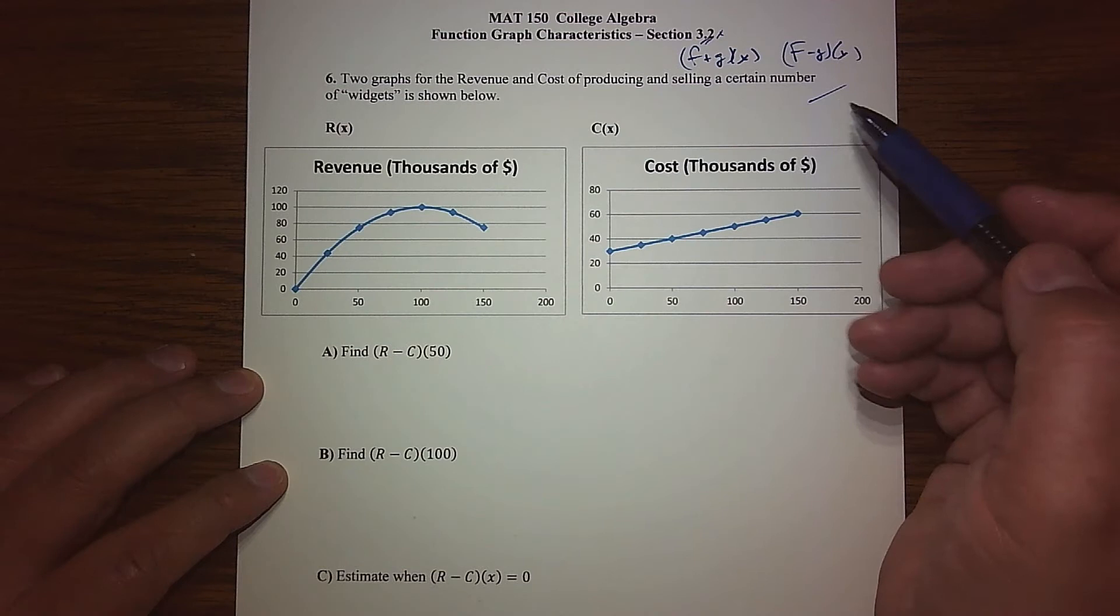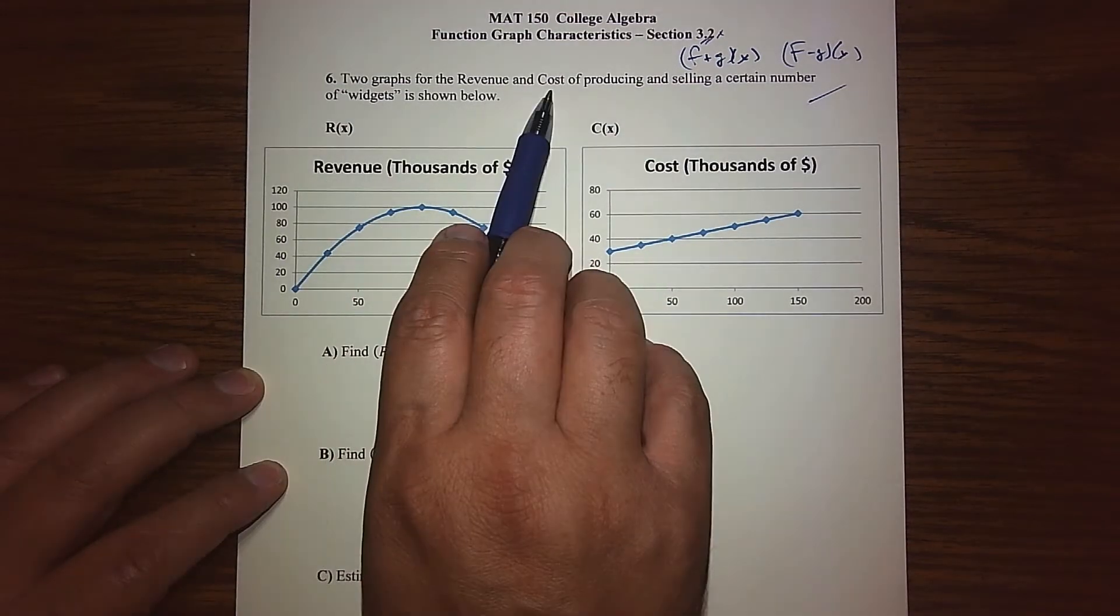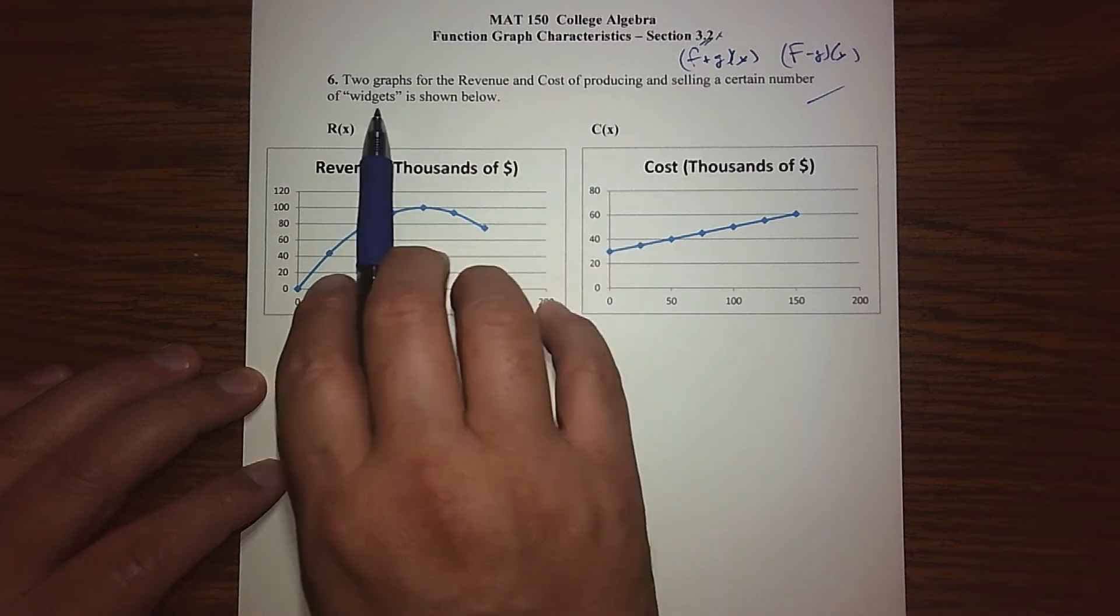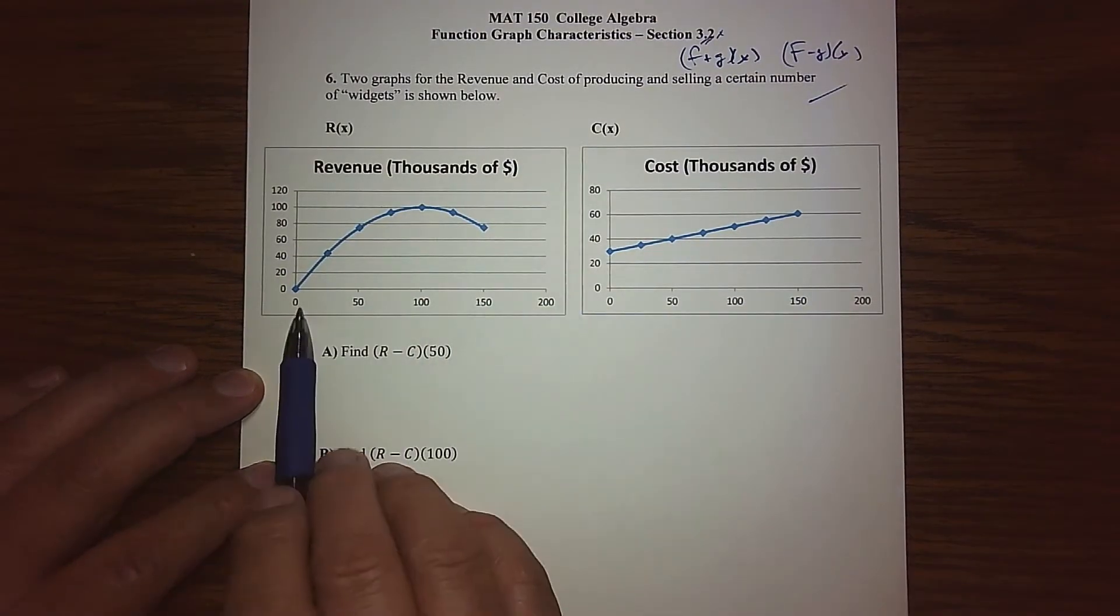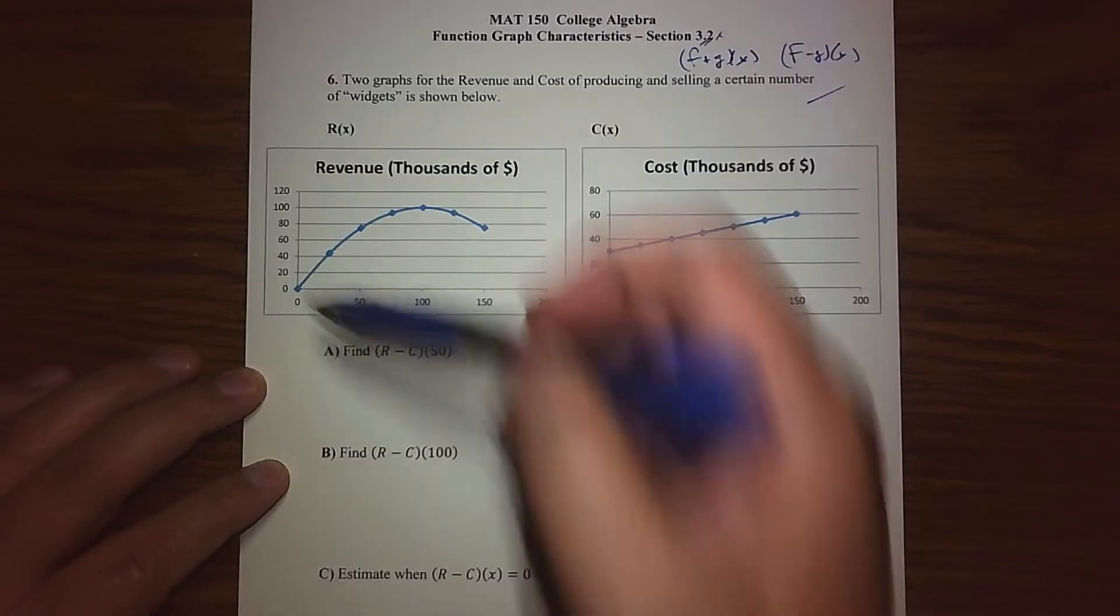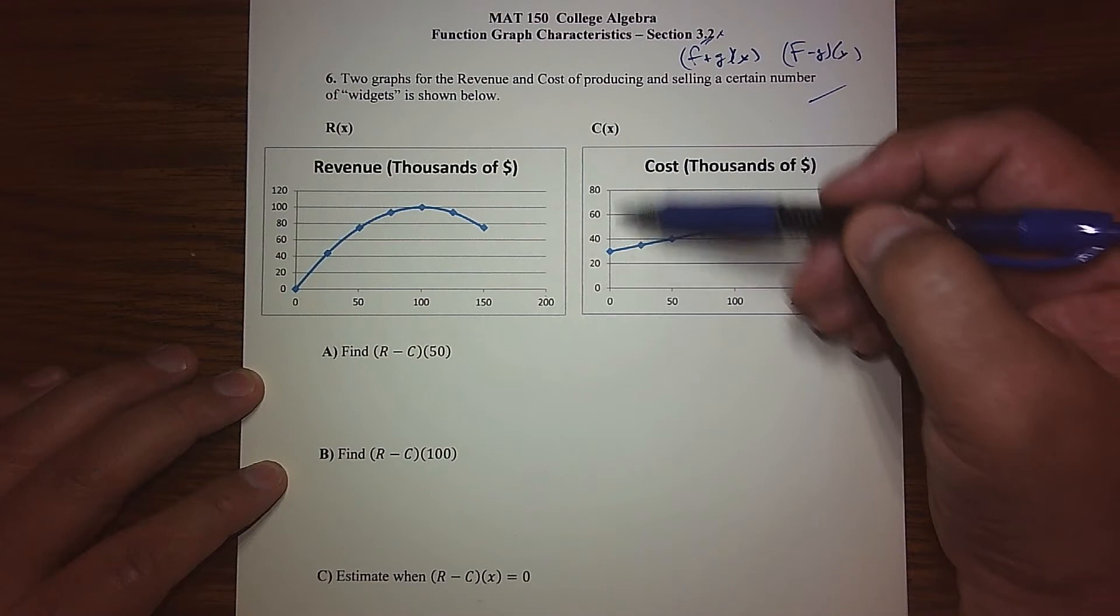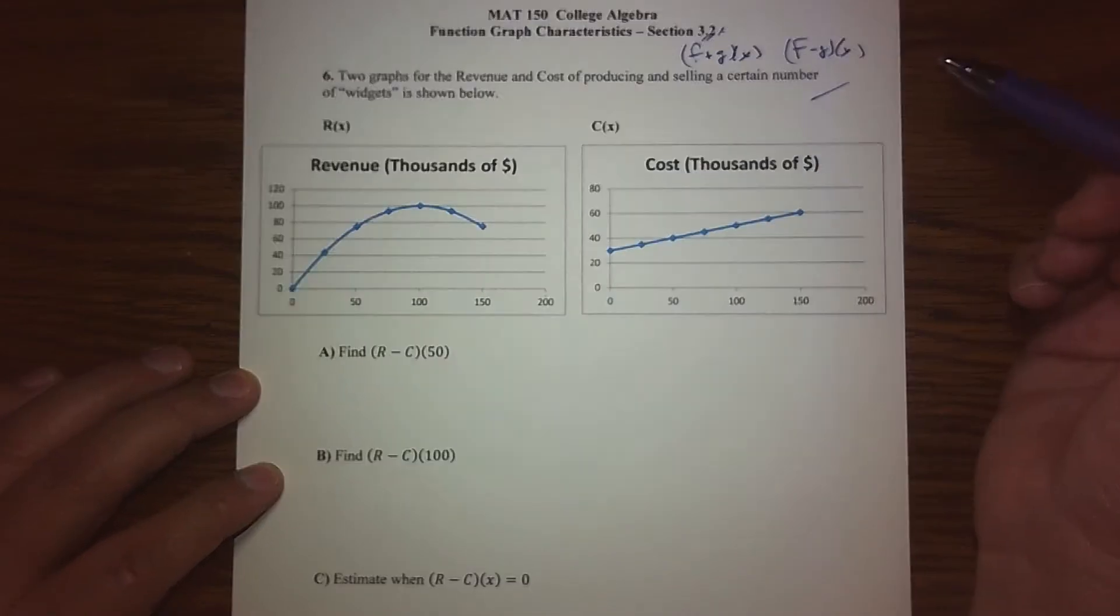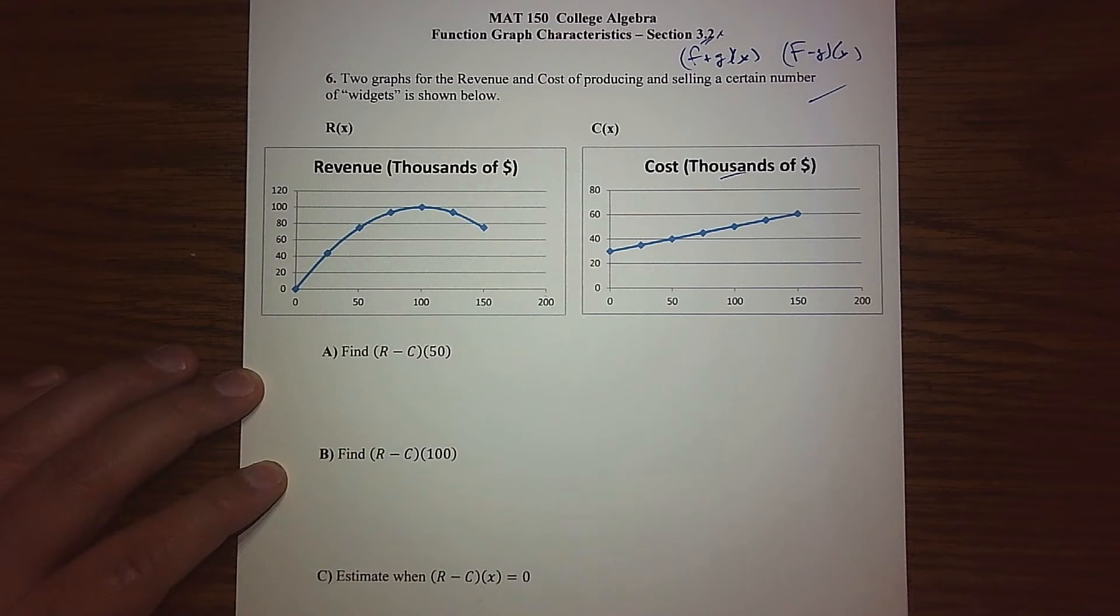Right now I have this hypothetical situation where we're looking at two graphs: the revenue and the cost of producing a certain number of widgets. The number of widgets is on the x-axis and the revenue in thousands of dollars is along the Y, and the cost of producing them is along the Y over here, again in thousands of dollars.